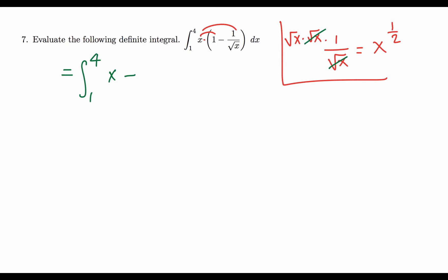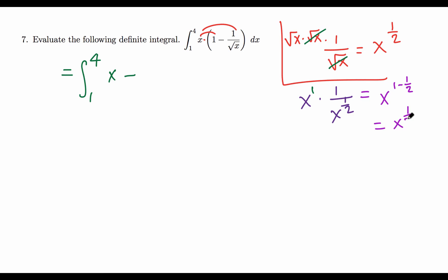To confirm: x times (1 over root x) means x times x raised to negative 1/2. Same base x, so we add exponents: 1 plus negative 1/2 equals 1/2. So x times (1/√x) simplifies to x raised to 1/2.